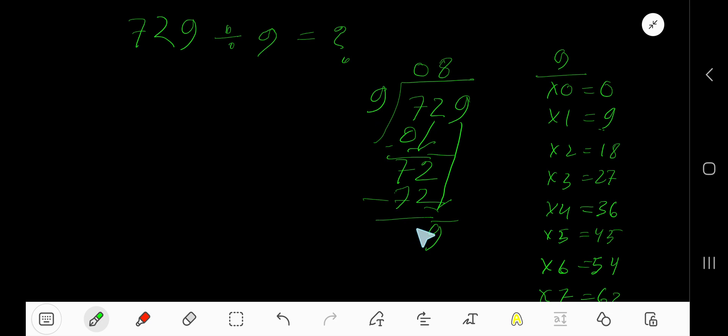9 goes into 9 how many times? 9 goes into 9 one time. Write 1. 1 times 9 is 9. Subtract 0. So our answer is 081, that is 81. 81 is our result.